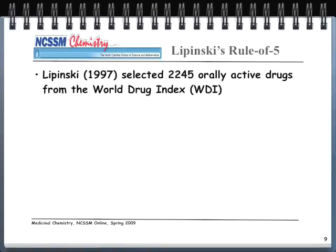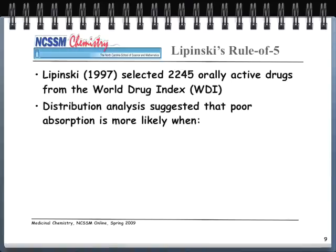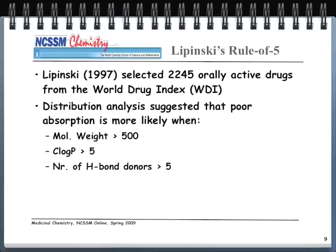Lipinski's rule of five — you should be getting familiar with this by now. He did this work in 1997, selecting about 2,000 orally active drugs from the World Drug Index. Drugs distribute poorly when molecular weight is greater than 500, log P is greater than 5, hydrogen bond donors exceed 5, or hydrogen bond acceptors exceed 10. We want all our numbers below these thresholds — less than 500, less than 5, less than 5, and less than 10 — for good absorption.